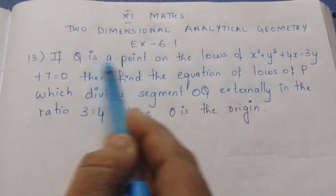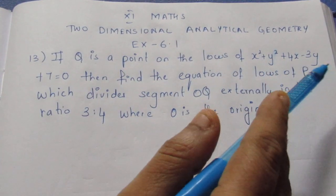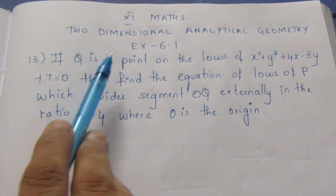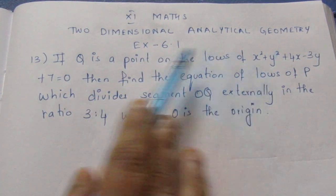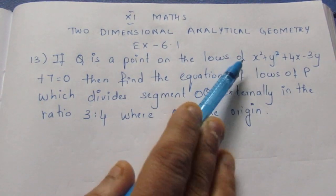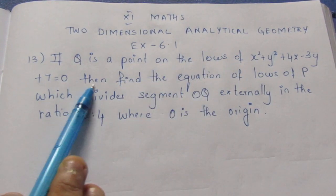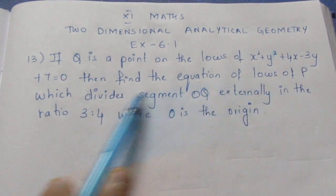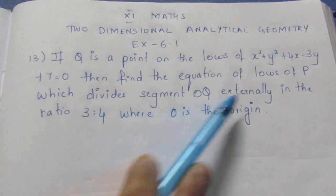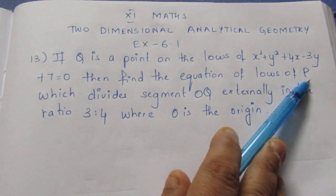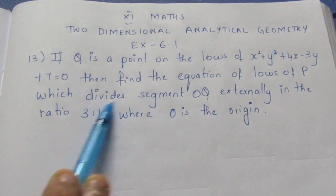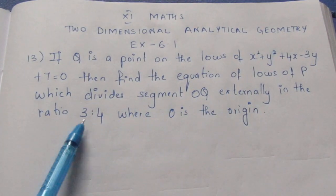Q is the point on the locus — this is the equation. If you have the point on x, y, then we know the values of x and y, and we can substitute x and y. Then find the equation of the locus of P, which divides OQ externally in the ratio 3 is to 4.